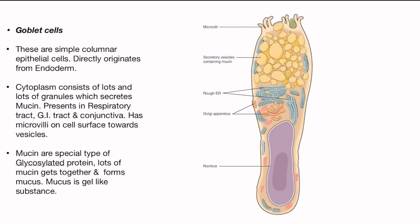In koshika ke andar jo cytoplasm hai, in me bhar bhar ke granules pare hote hai jo mucin banate hai. Yeh sab koshika hamari milti hai GI tract, respiratory tract, conjunctiva me, jaha par vesicle hota hai. Iske thik upar chhote chhote microvilli rehte hai.